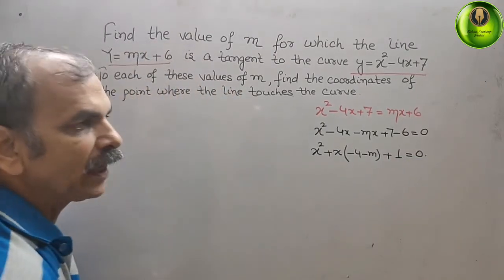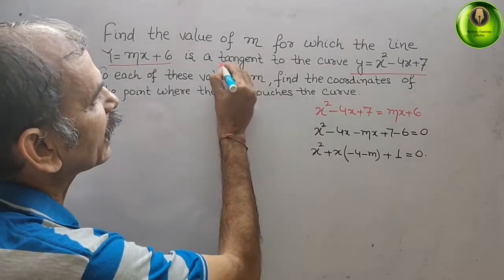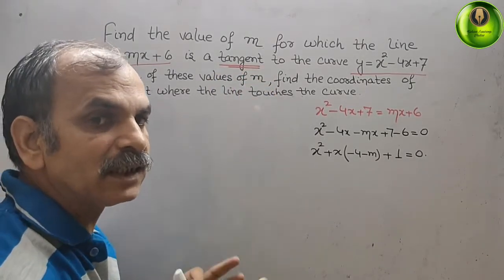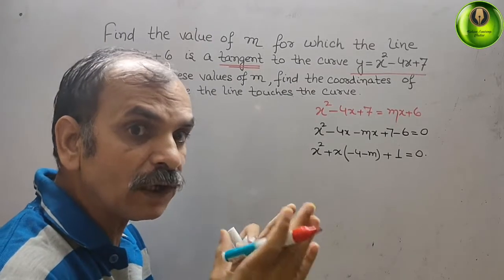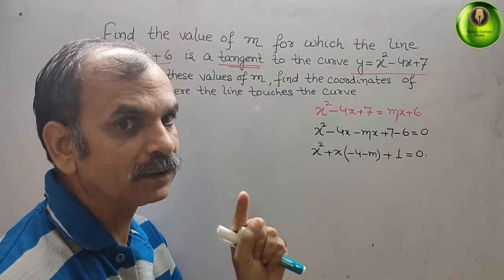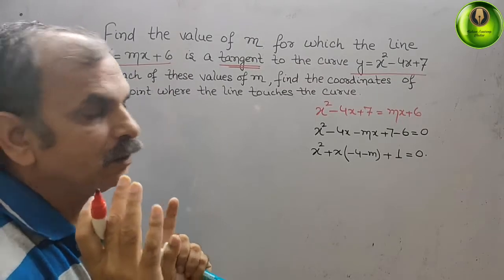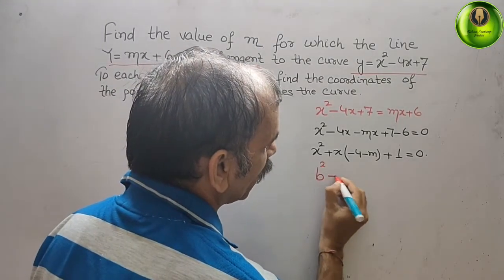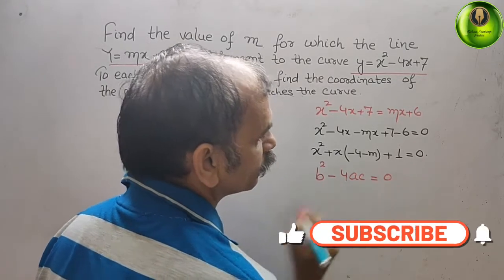Since the line is a tangent, it touches the curve at exactly one point. Therefore, the discriminant must equal zero. So we apply the condition: b² - 4ac = 0.